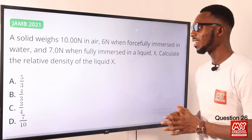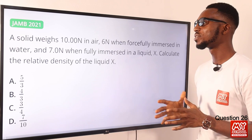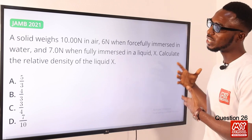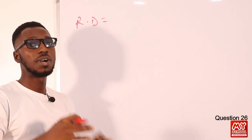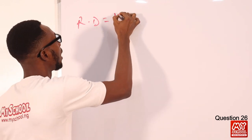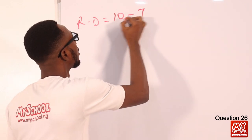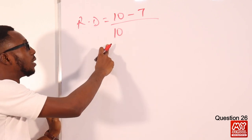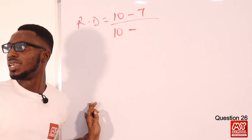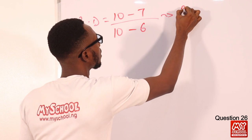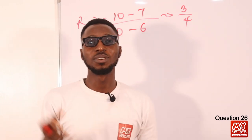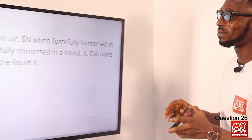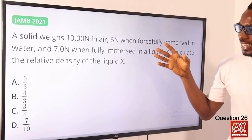Question 26: a solid weighs 10.00 N in air, 6 N when fully immersed in water, and 7.0 N when fully immersed in liquid X. Calculate the relative density of liquid X. Relative density = loss of weight in liquid / loss of weight in water = (10 − 7) / (10 − 6) = 3/4 = 0.75. Option C is the correct option.